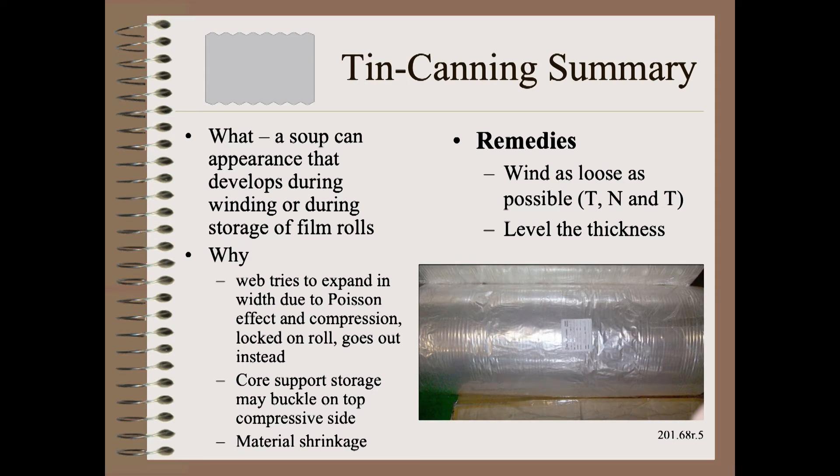In summary, the defining feature of a tin can is a regular spacing of ridges that is not associated with regularly spaced thickness ridges. The physics of why this defect forms is complicated, so we will not cover it here. See my Web 101 school for more details.